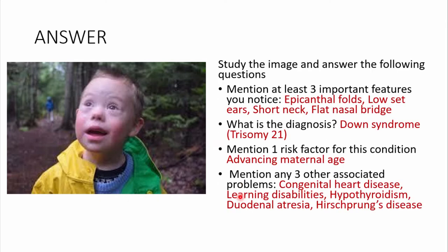So from this image, this child has epicanthal folds, a flat nasal bridge, a short neck, and low-set ears. This is most likely Down syndrome or Trisomy 21. One risk factor for this condition is advancing maternal age — as a woman gets older, especially beyond the age of 35, there is a much higher chance of giving birth to a child with Trisomy 21.